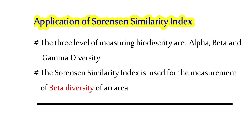There are three levels of measurement of biodiversity: alpha diversity, beta diversity, and gamma diversity. Alpha biodiversity refers to the number of species found in a particular community. Beta diversity refers to the number of species found across two communities studied. Gamma diversity refers to the overall diversity found in a particular landscape or ecosystem under study. The Sorensen Similarity Index is used for the measurement of beta diversity.